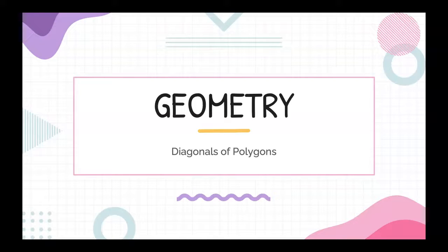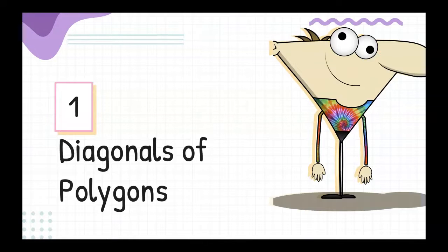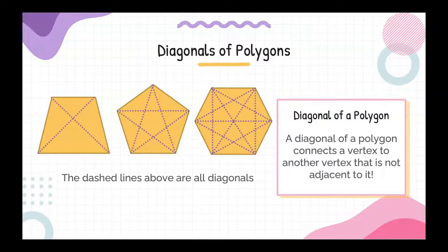In this video, we're going to be learning how to find the number of diagonals in a polygon. A diagonal of a polygon is a part of a polygon that connects a vertex to another vertex that's not directly adjacent to it.